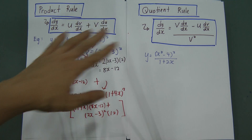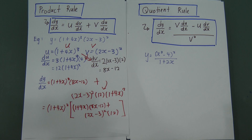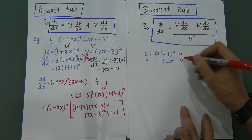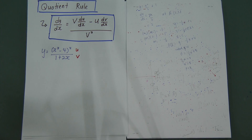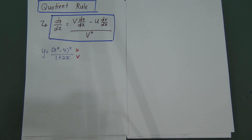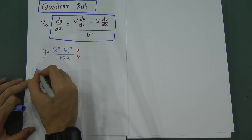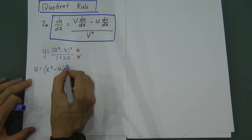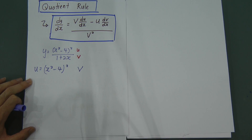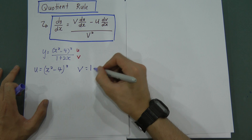The same approach applies for the quotient rule. For the quotient rule, you let the top function become U and the bottom one become V. So here, U equals (X² − 4)² and V equals (1 + 2X).